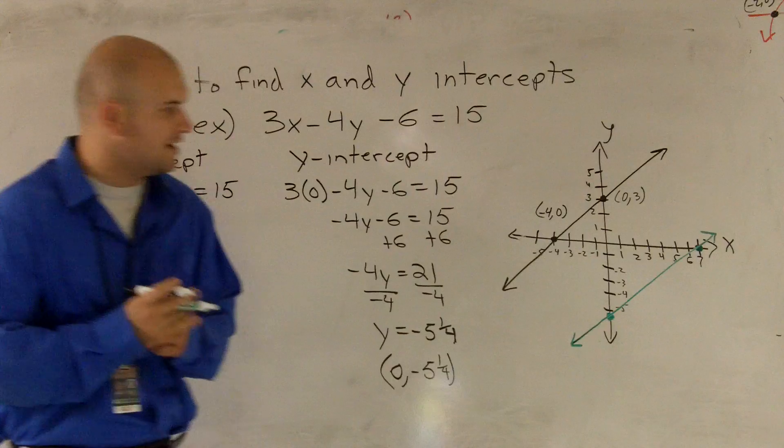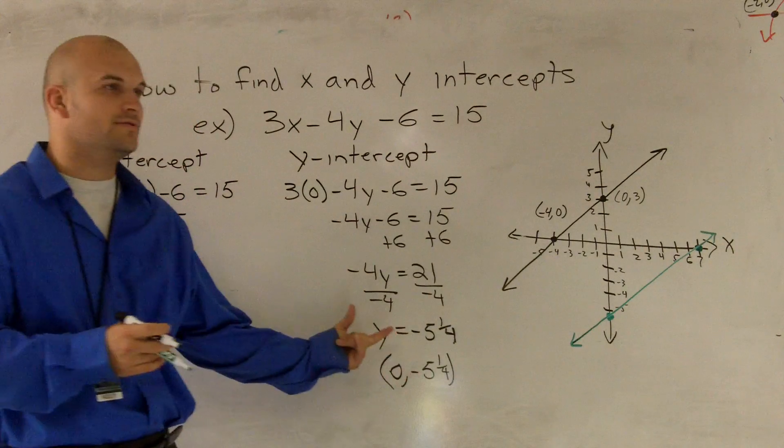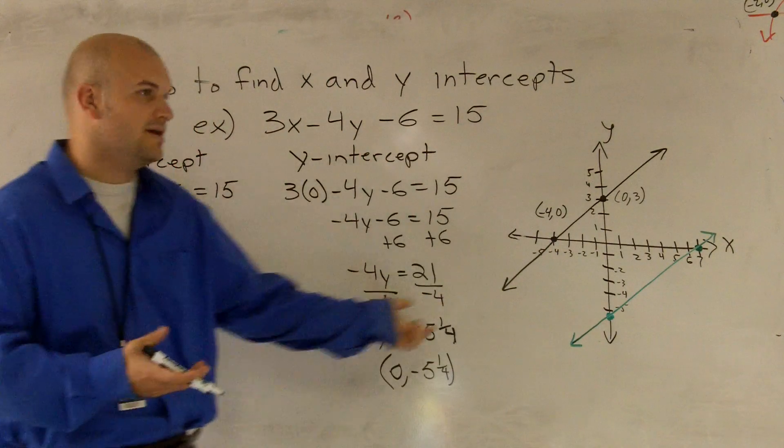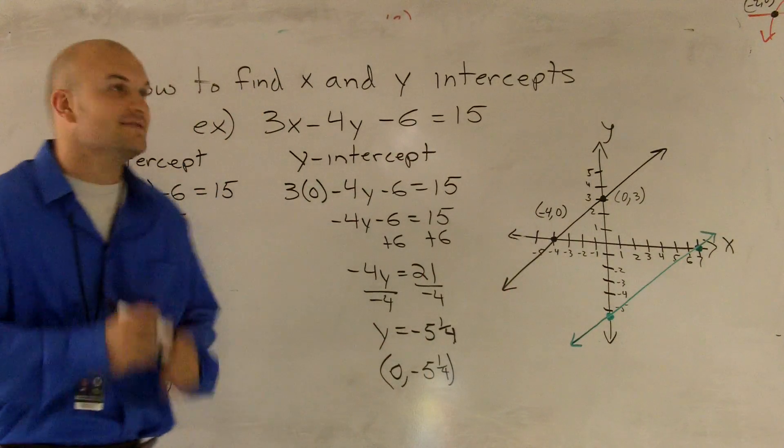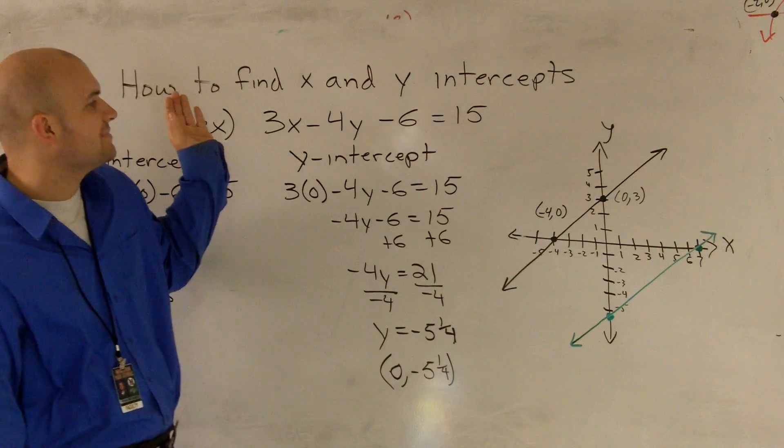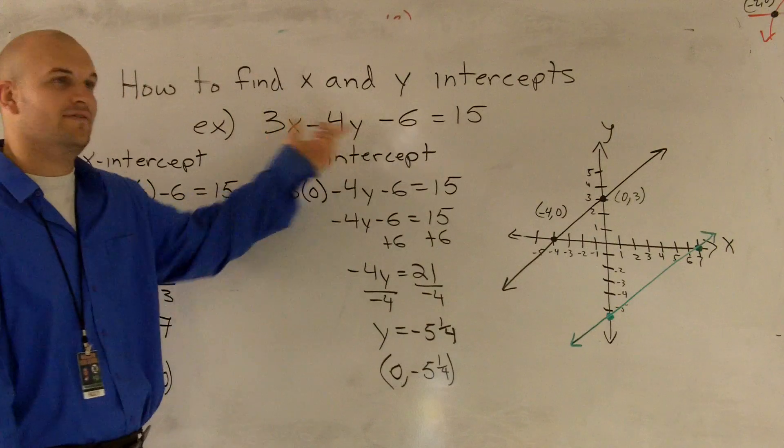So therefore, if I wanted to learn how to graph this, theoretically, a way to graph is just to find your x and y-intercepts, and then graph it. So that is how you can find your x and y-intercepts given an equation.